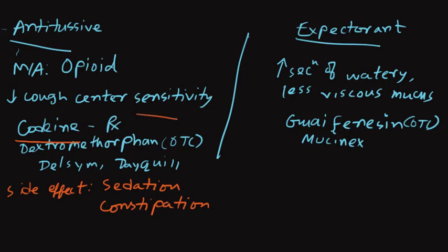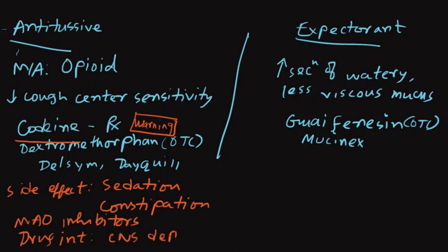Codeine-type antitussives have a boxed warning. They should not be used in children who have recently undergone tonsillectomy or removal of tonsils. These antitussives should be avoided with recent use of MAO inhibitors (monoamine oxidase inhibitors), and they have drug interactions with other CNS depressant drugs like alcohol and antihistamines because antitussives may also have sedative effects. In the case of expectorants, there are no major side effects.